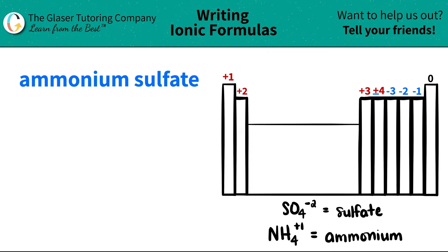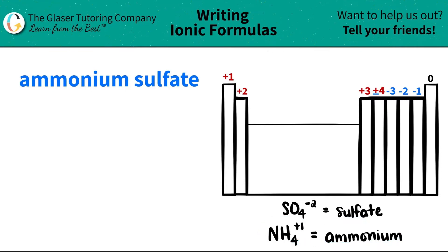And that should send off some signals in your brain saying, hey, wait a minute, that's a polyatomic ion. And you're absolutely correct. Ammonium is a polyatomic ion — it will not be found on the periodic table. So you guys have to memorize that ammonium is NH4 and it always has a plus one charge.